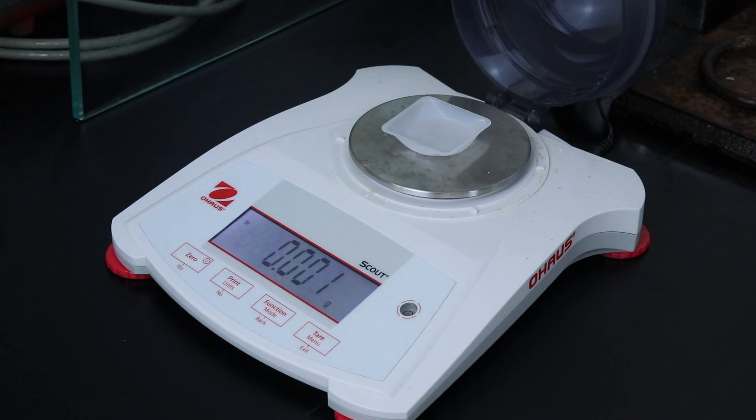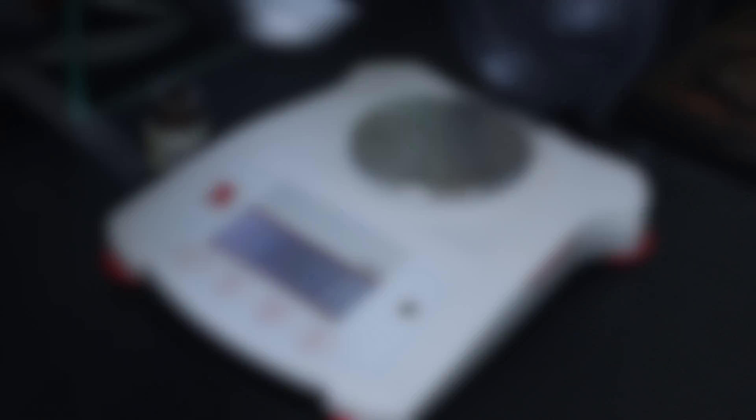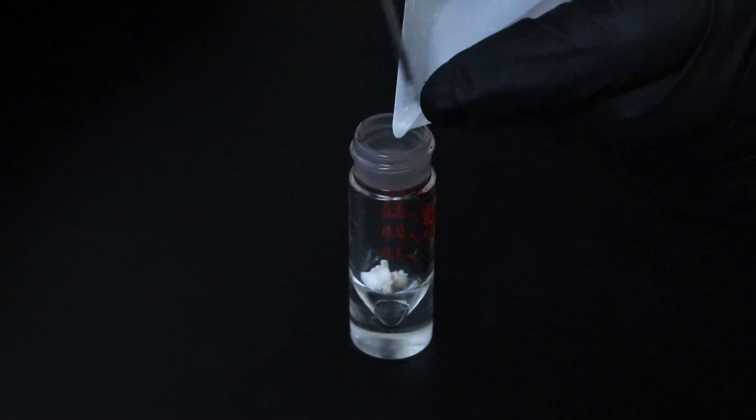Alright I'm going to start by weighing out 37 milligrams of the thiamine hydrochloride salt and add that to a 5 milliliter conical vial with a spin vane.